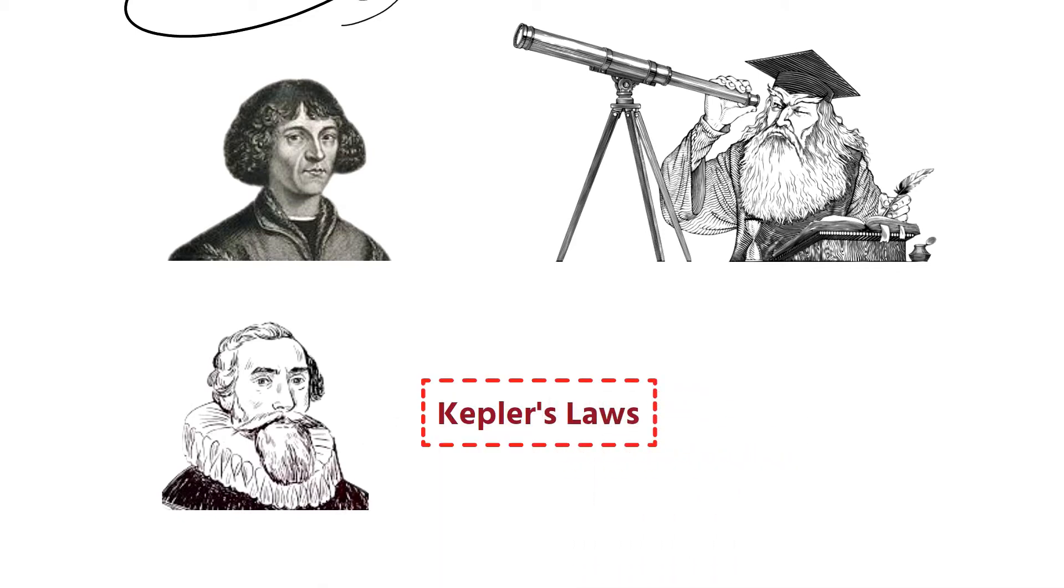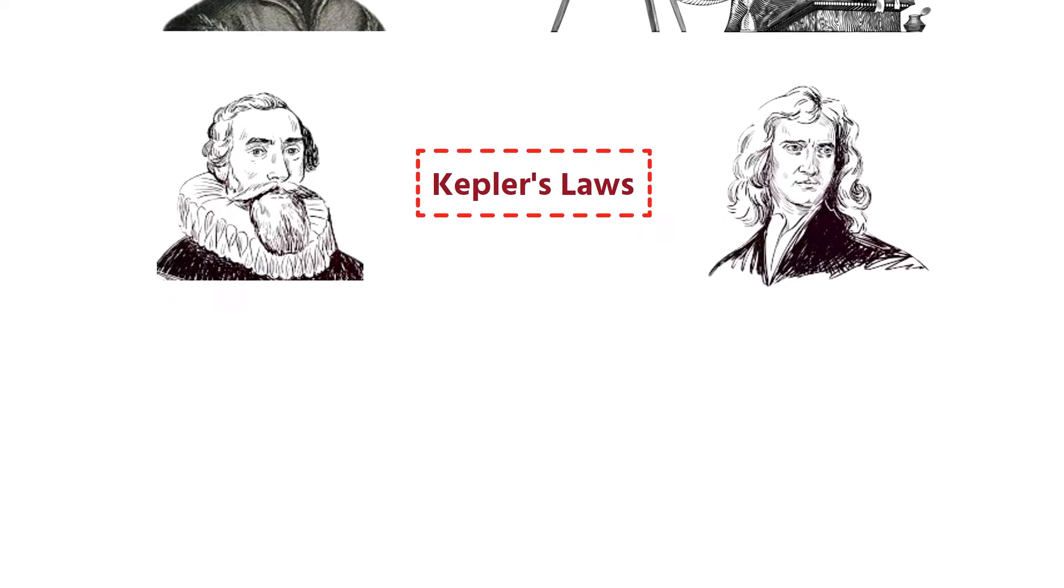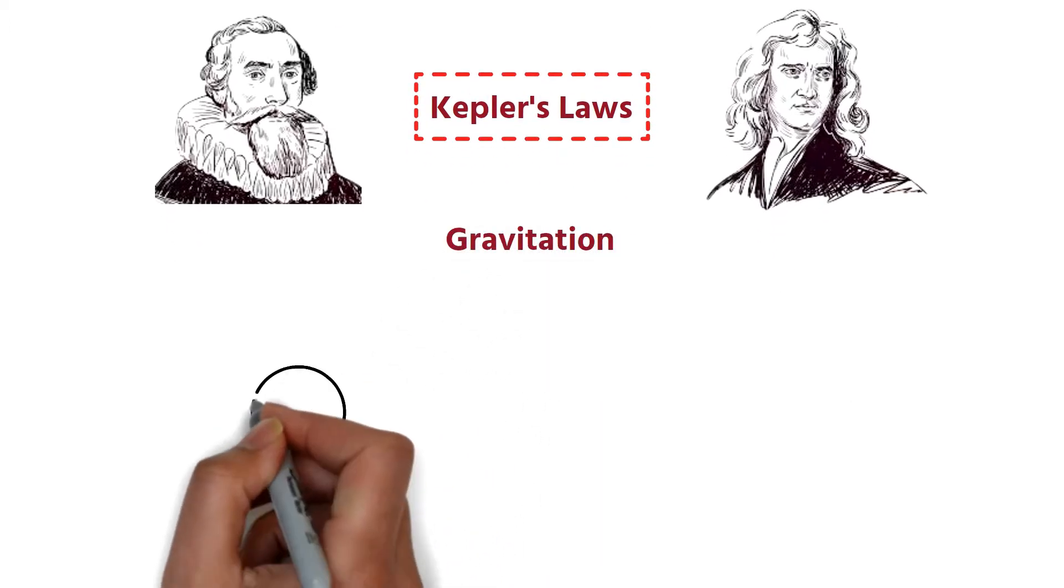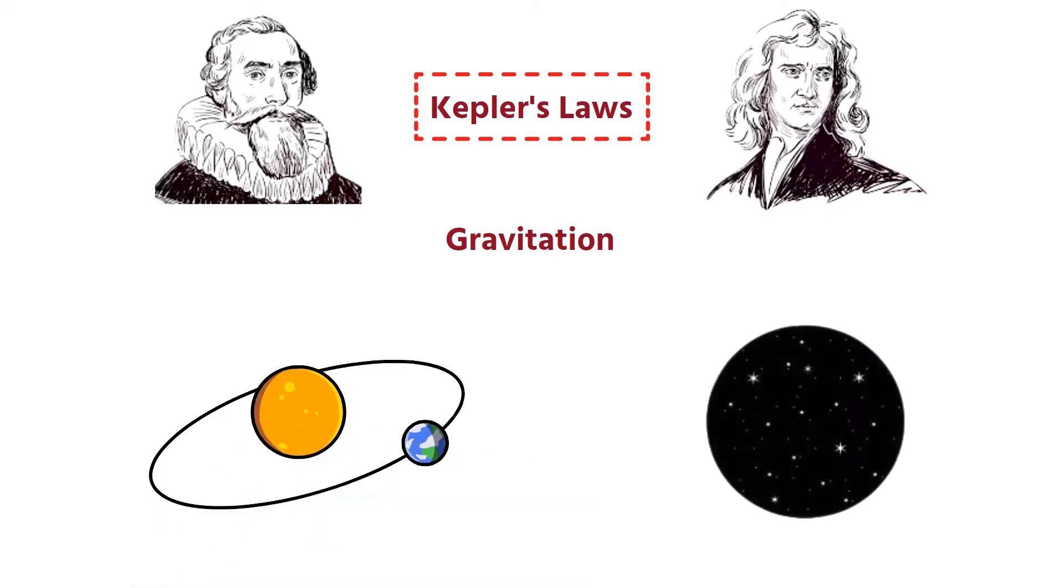By analyzing these laws, Sir Isaac Newton determined the nature of the force of attraction between the Sun and the planets. This force of attraction is called gravitation, which not only acts between the Sun and the planets, but also between any two objects in the universe.